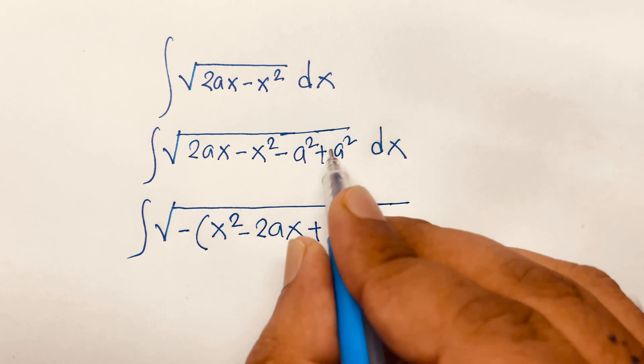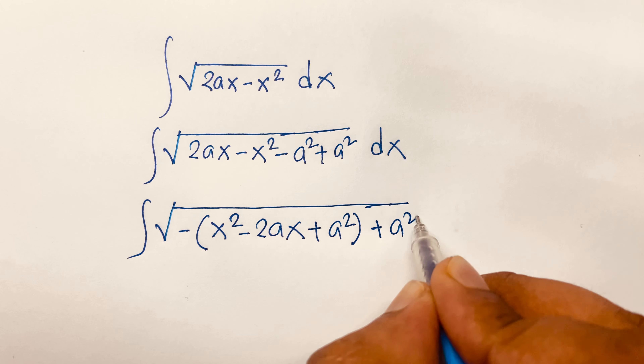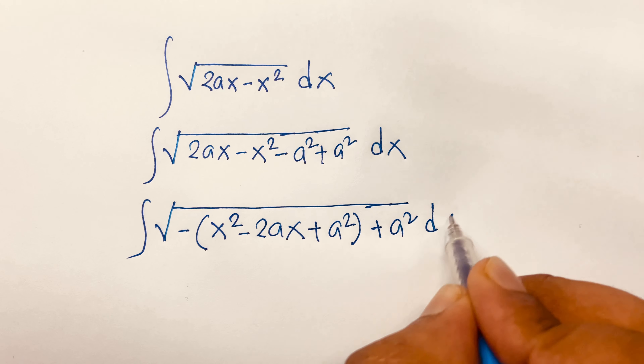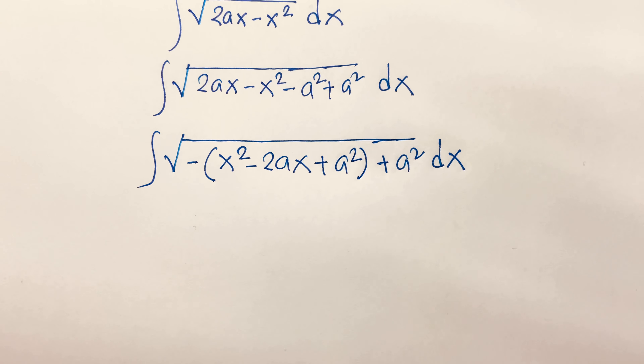How to solve the integral of √(2ax − x²) dx?